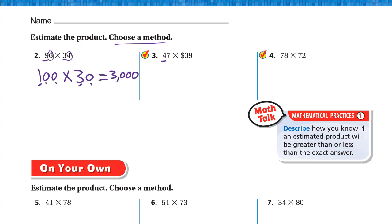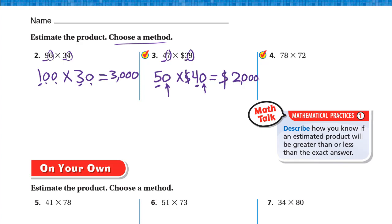Number three: estimate 47 × 39. Let's round to the nearest ten. For 47: to the right of the 4 we have 7, which is a strong digit, so 40 becomes 50. For 39: to the right of the 3 we have 9, which is strong, so 30 becomes 40. So 50 × 40: 5 × 4 = 20, and we have two zeros, giving us 2000.